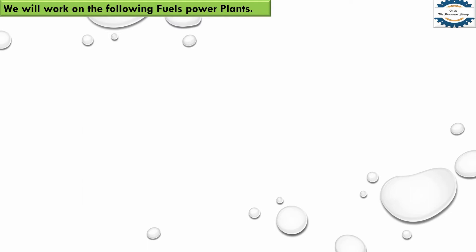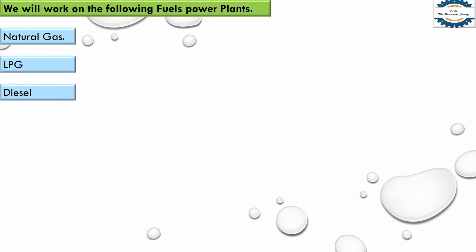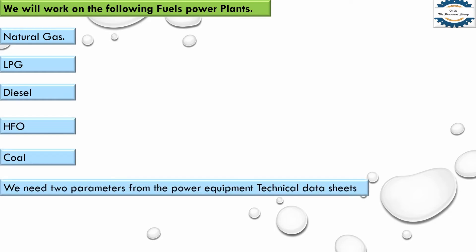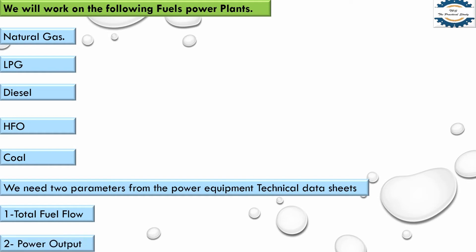We will work on the following fuel power plants: natural gas, LPG, diesel, HFO, and coal. For this purpose, we need two important parameters from the technical data sheet of each power plant: number one, total fuel flow, and number two, power output.